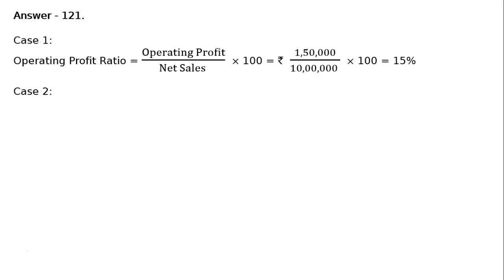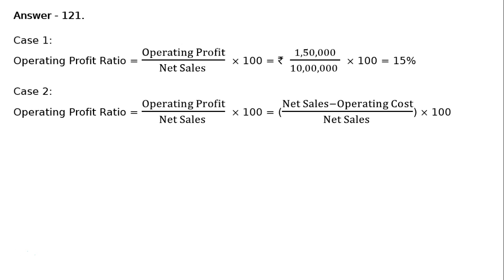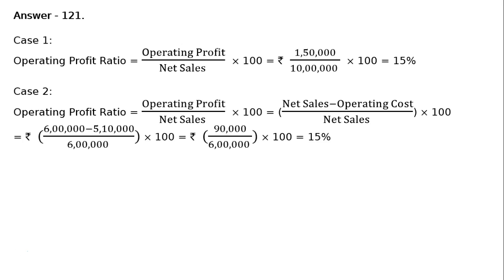Here revenue from operations and operating cost are given. Operating profit ratio is equal to operating profit upon net sales into 100, that is equal to net sales minus operating cost, upon net sales into 100. That is equal to Rs. 6 lakh minus Rs. 5 lakh 10,000, whole divided by Rs. 6 lakh into 100, equal to Rs. 90,000 upon Rs. 6 lakh into 100, equal to 15%. Case 3.